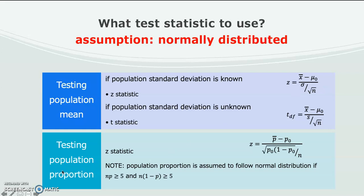For population proportion, we definitely will use the Z statistic. And we must find out first whether the population proportion follow a normal distribution.